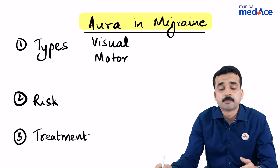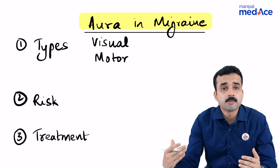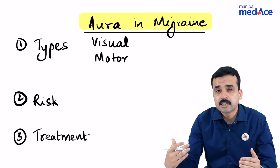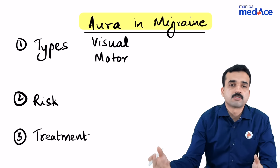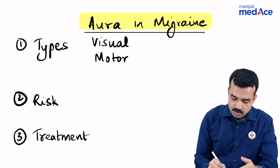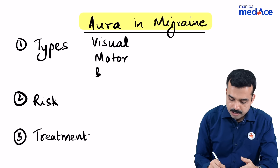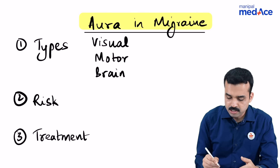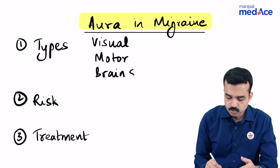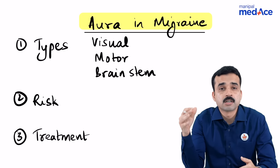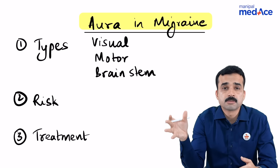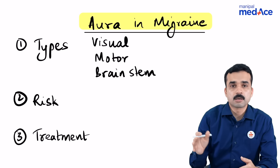Or it could be in the form of a motor aura, like hemiplegic migraine, where patients may actually develop a transient hemiplegia before the onset of the migraine. It may also sometimes be brainstem aura, where patients experience vertigo.